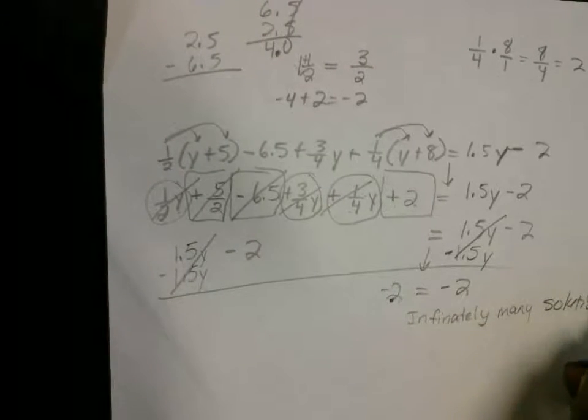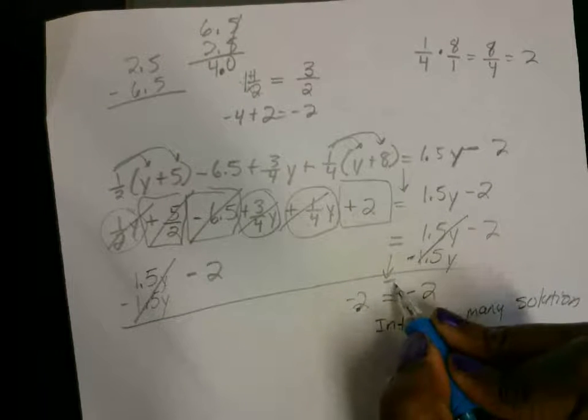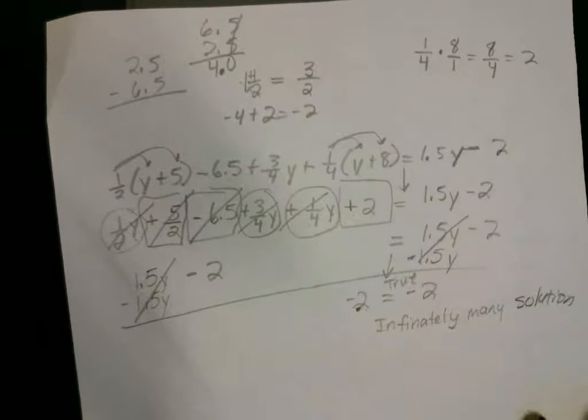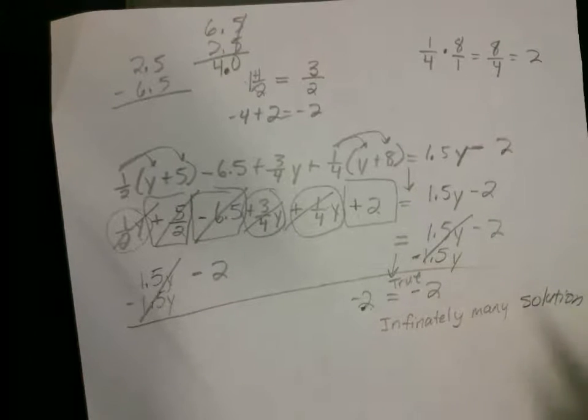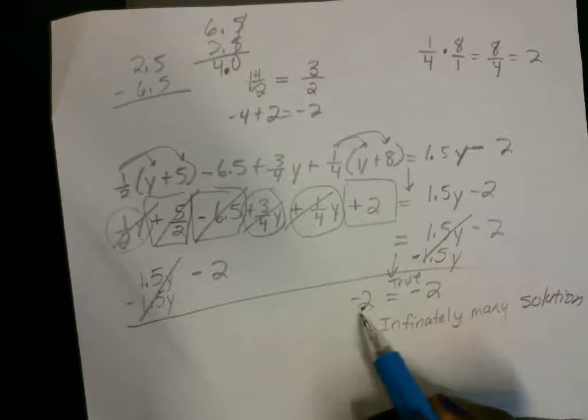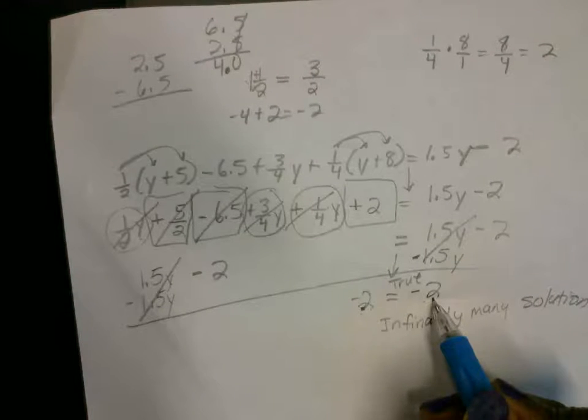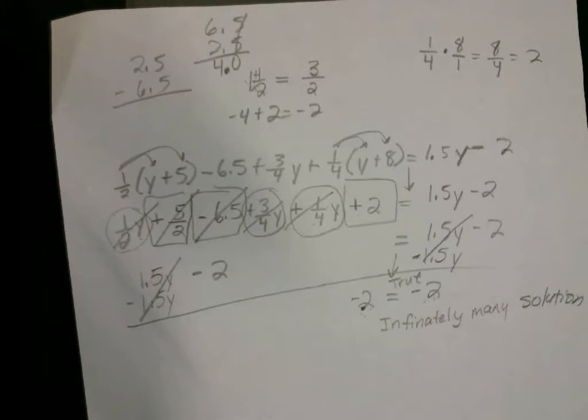So when your variables cancel out and this is true, it's infinitely many. If it was false, it would mean no solution. No number would ever work. But since this is actually a true statement, negative 2 is equal to negative 2, that means it's infinitely many solutions. I'm glad I did this one. That is the homework help video for Wednesday. Have a good one.